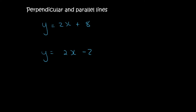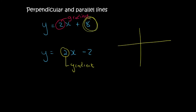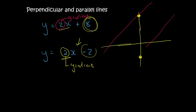If I look at these two equations, they are already written in standard form. The gradient of the top line is 2 — remember we learned that the number in front of the x is the gradient. And this gradient over here is also 2. So these two lines have the same gradient. On a graph, this one has a y-intercept of 8, so I'll draw it up here, with a gradient of positive 2. This one at the bottom has a y-intercept of negative 2, but also a gradient of 2. So the two lines look like railway lines — they are parallel.